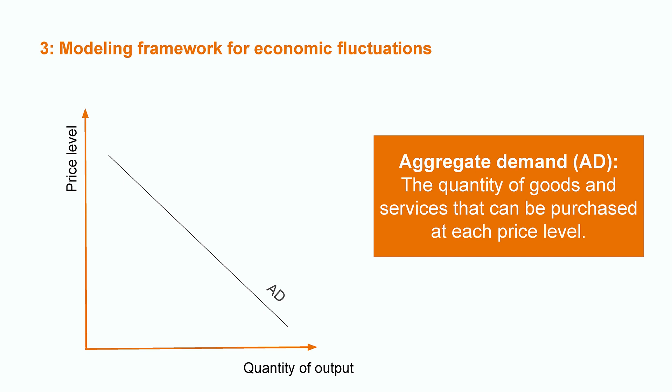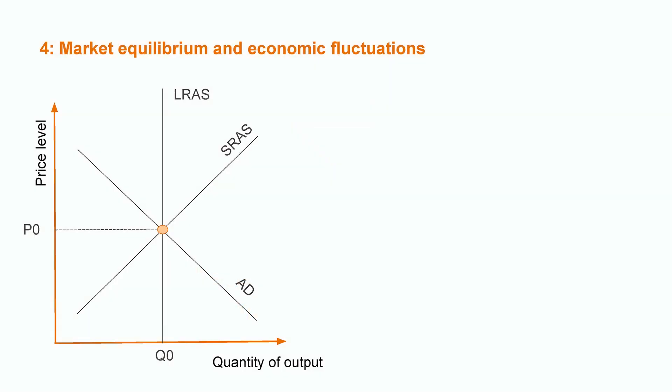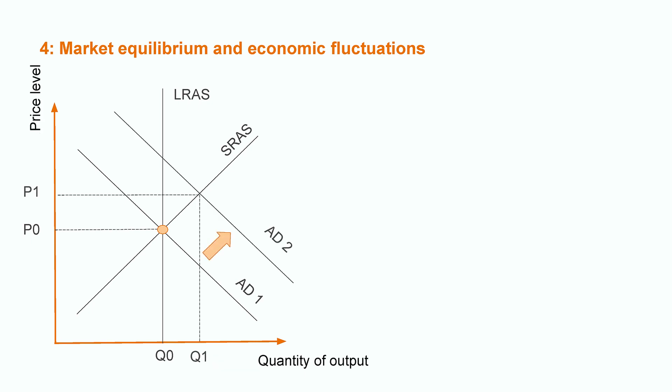Aggregate demand is the curve on the graph that shows the quantity of goods and services that households, firms, the government, and customers abroad want to buy at each price level. Aggregate demand is downward sloping in the long and in the short run. In the short run, market equilibrium occurs when aggregate demand equals aggregate supply. This is how the equilibrium quantity of output and price level is decided. P0 is the equilibrium price level and Q0 is the equilibrium quantity. In the long run, the output will always return to the potential output level Q0, but in the short run the output level can deviate from the optimum, generating economic fluctuations.